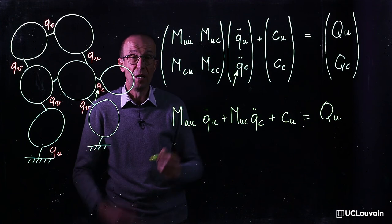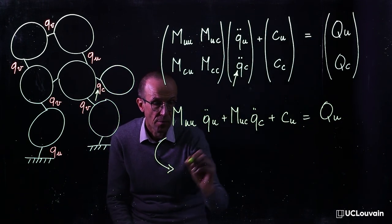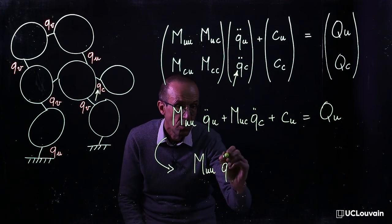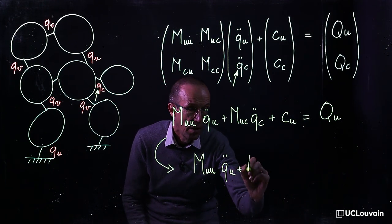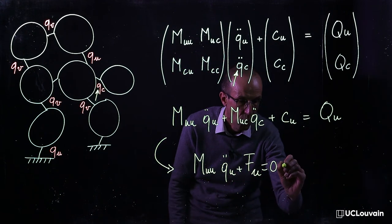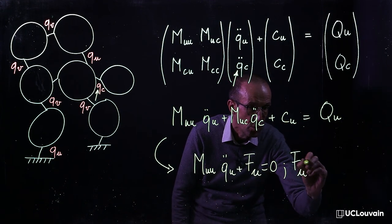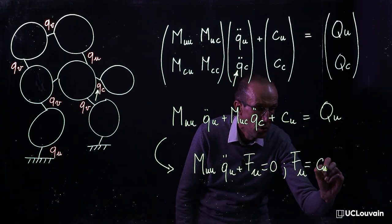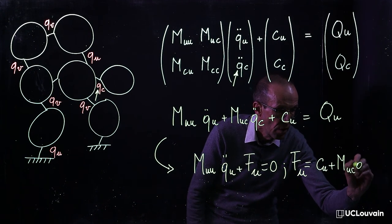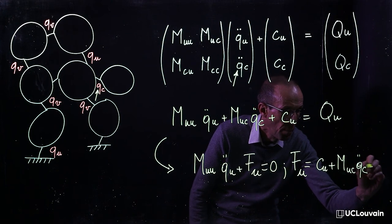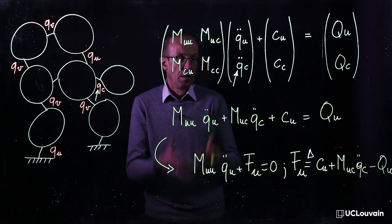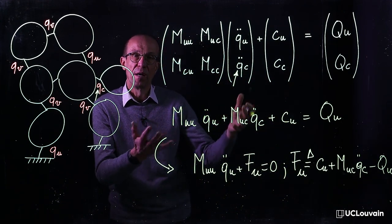Or, in a more synthetic form, m_uu q double dot u plus f_u is equal to 0, with f_u being equal to c_u plus m_uc q double dot c minus q_u. This represents the direct dynamics of my system.